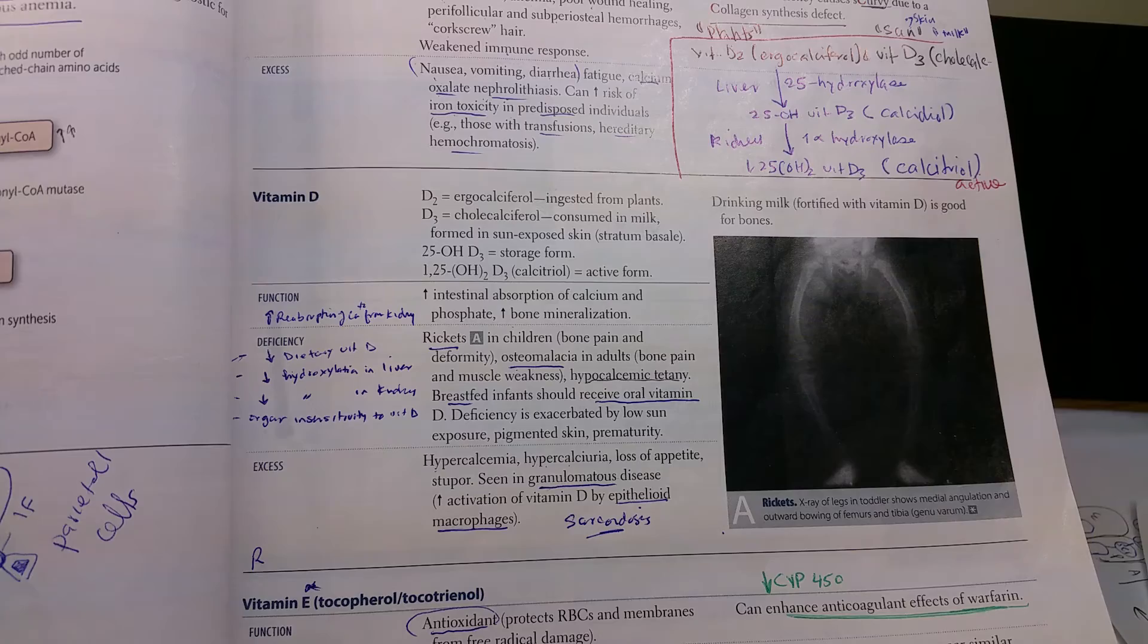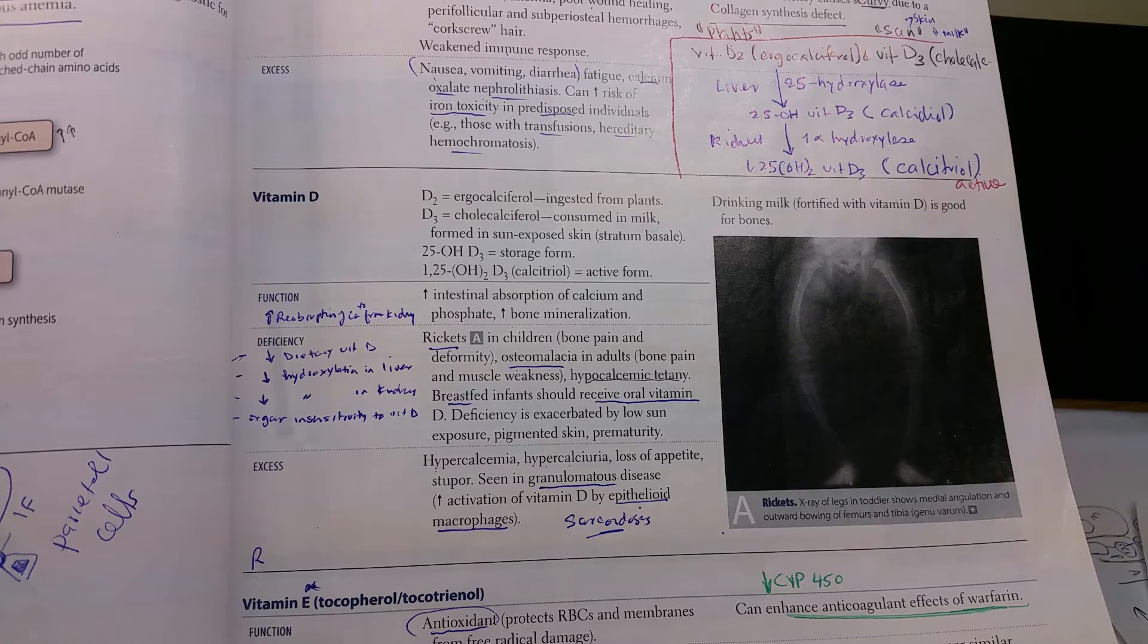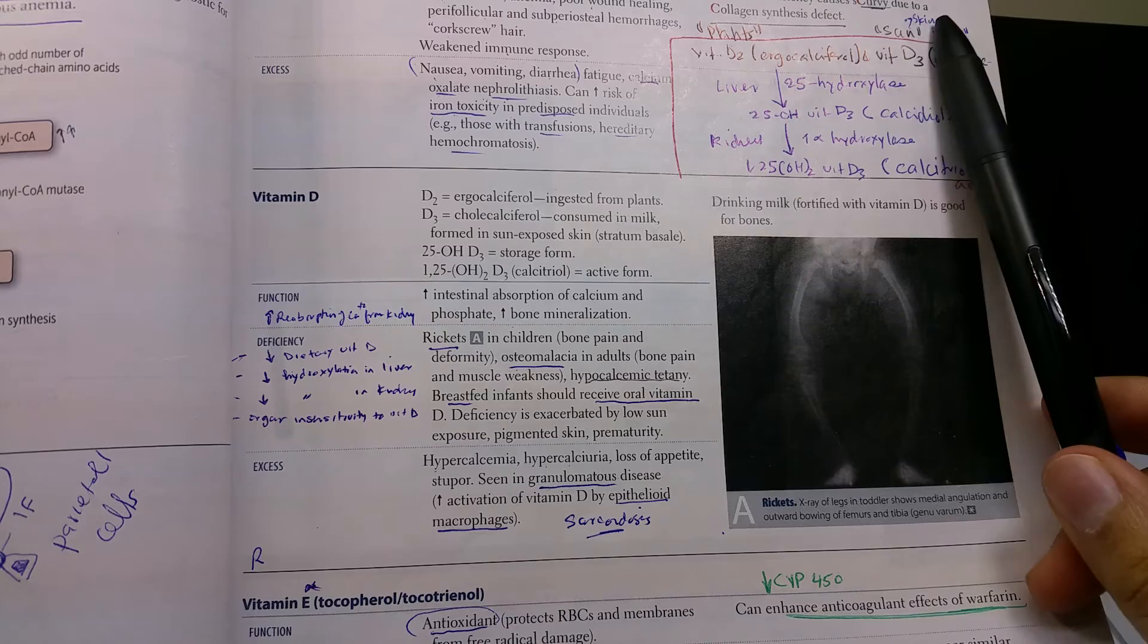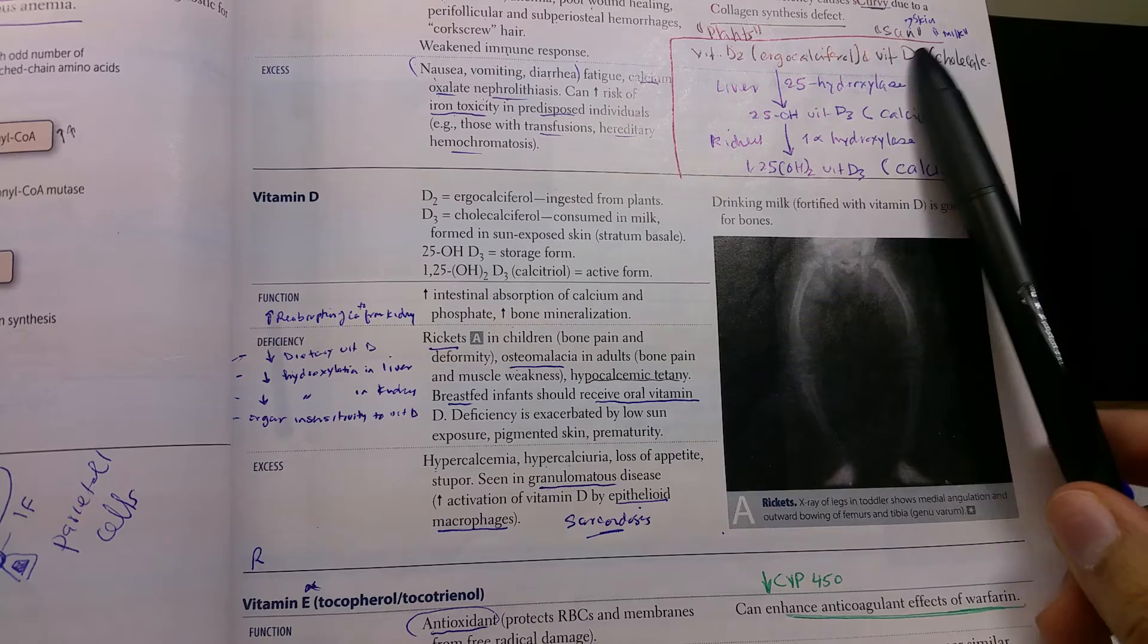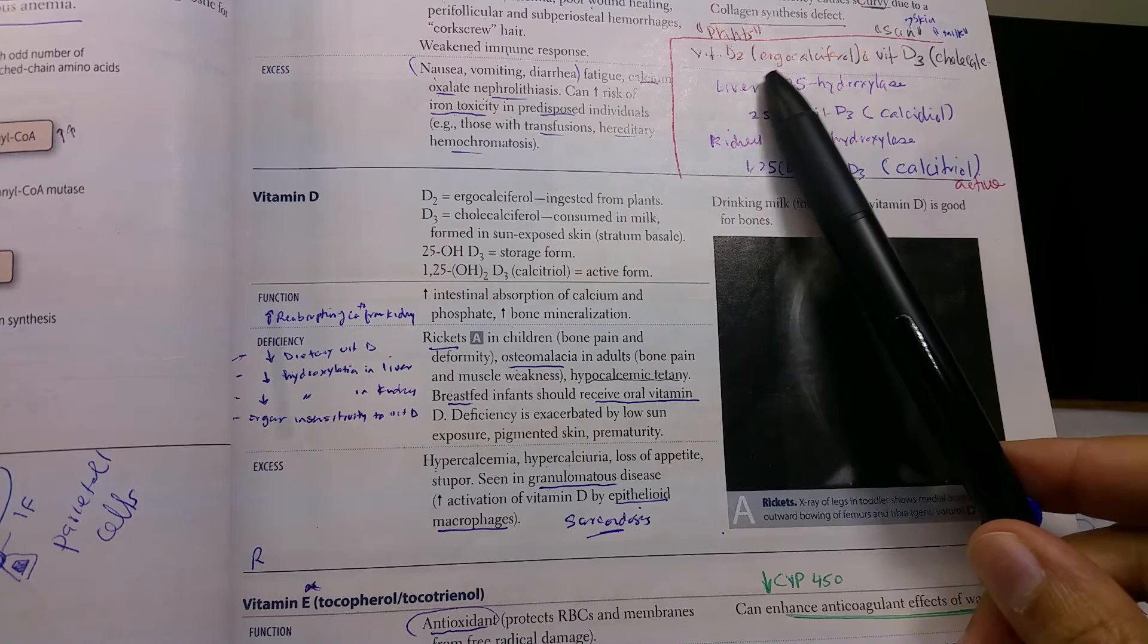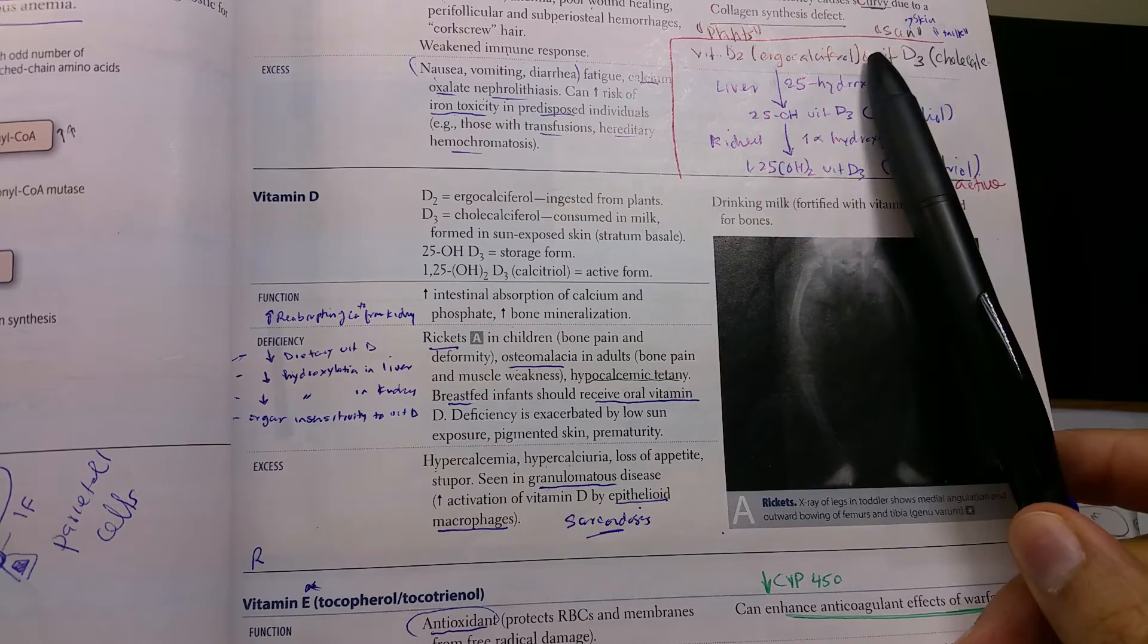We'll talk about vitamin D now. Vitamin D exists in many forms. Vitamin D2 exists in plants, ergocalciferol. Vitamin D3 is produced by the skin upon exposure to sunlight or can be given in milk, cholecalciferol.